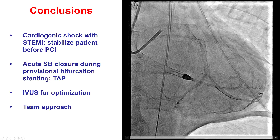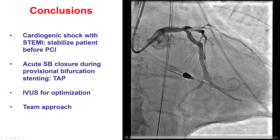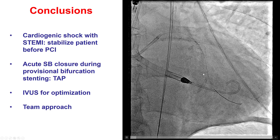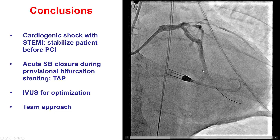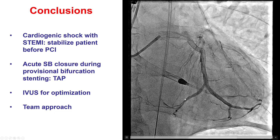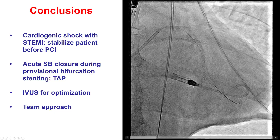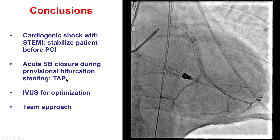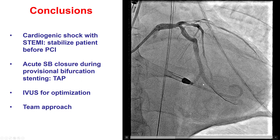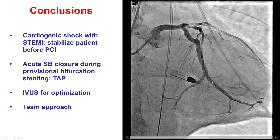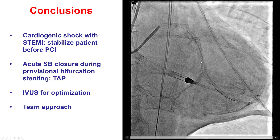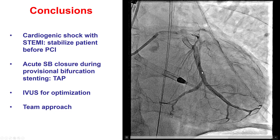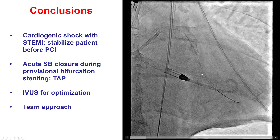This was a bifurcation lesion of the second obtuse marginal and distal circumflex. We tried the provisional approach, but unfortunately that resulted in occlusion of the distal circumflex. The solution in this case was the TAP — T and protrusion — technique. The favorable angle close to 90 degrees allowed this technique to provide a nice result with kissing balloon inflation at the end.